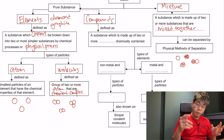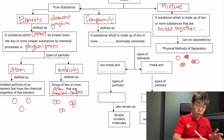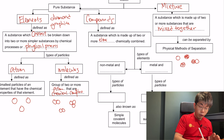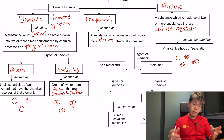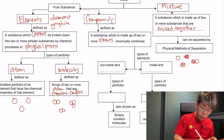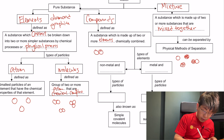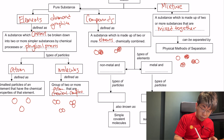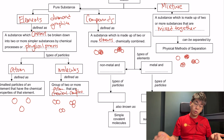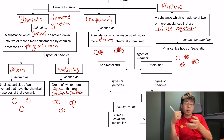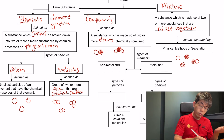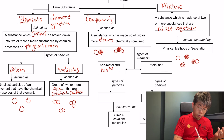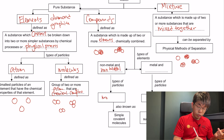Now let's look at the next type of pure substance: compounds. Compounds are substances made out of two or more elements — different types of atoms — that are chemically combined together. Two or more types of elements combining together can make a compound. There are two types: a non-metal and a non-metal joined together forms molecules.